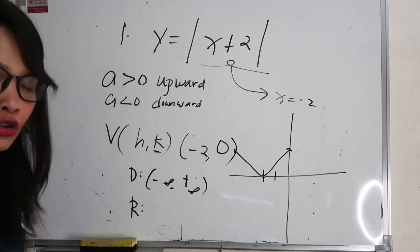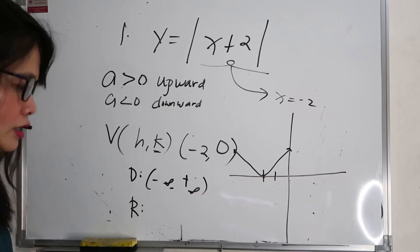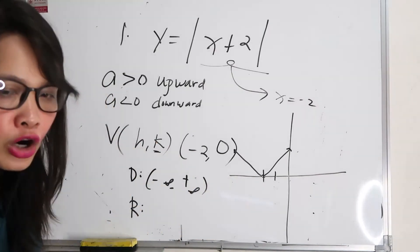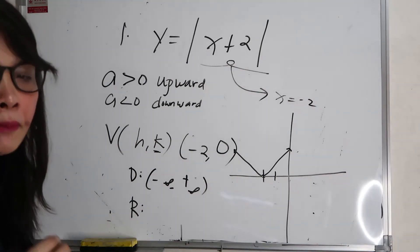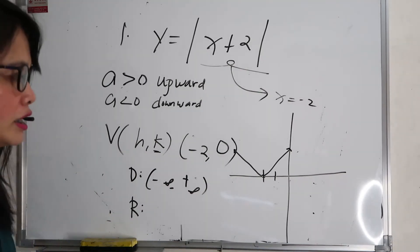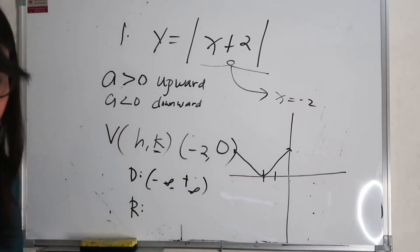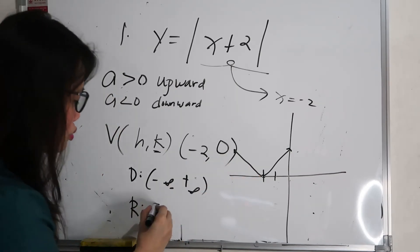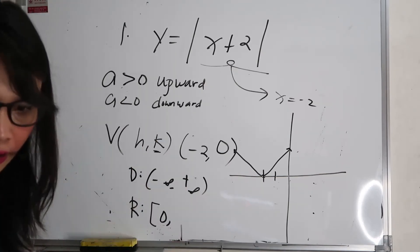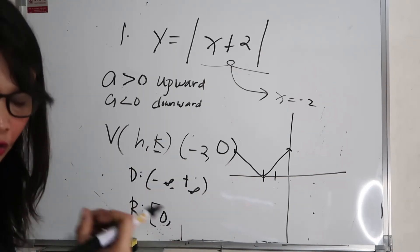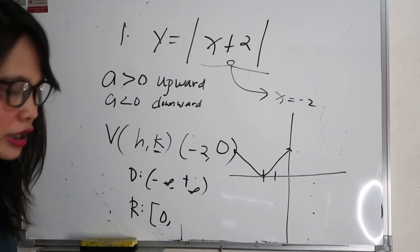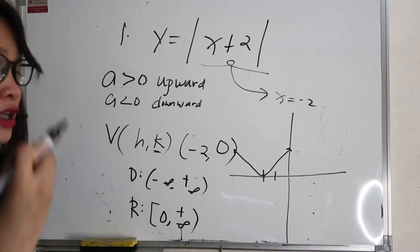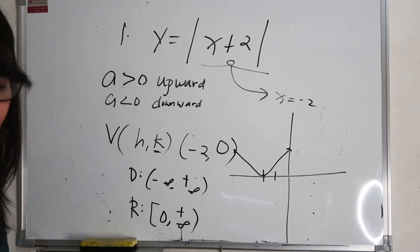Now, what about the range? Since we have a vertex, the range is based on the y-value. The minimum value of y in this graph is 0. So the range is from 0 to positive infinity. That's how we graph an absolute value function.